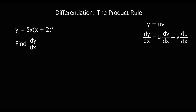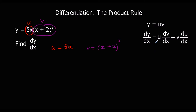This video is about differentiating using the product rule. We use the product rule to differentiate when we've got two functions multiplied together. In this case we've got 5x, which is one function we'll call u, and x plus 2 cubed, which is another function we'll call v. The product rule says we can find dy/dx by doing u·(dv/dx) plus v·(du/dx).